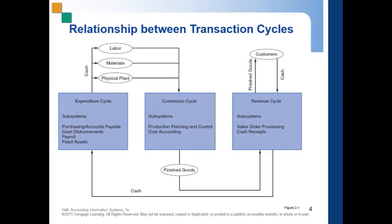Another form of expenditure is the fixed asset system, which handles transactions pertaining to physical plants and equipment. A firm's fixed asset system processes transactions pertaining to the acquisition, maintenance, and disposal of its fixed assets.